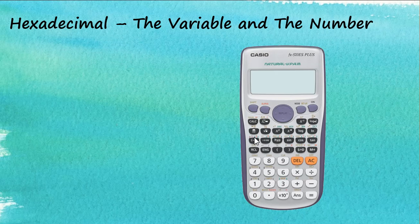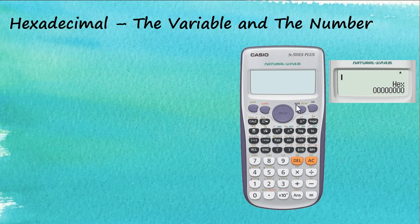Those letters represent variables. For the hexadecimal system, we also use the characters A through F to represent numbers. So how do we differentiate a variable from a number in the calculator? We are in hexadecimal mode, base 16. Let's store the number 2 using SHIFT → STORE into A, so now A holds the value 2.